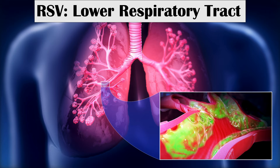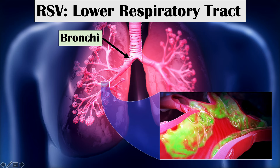Now let's look at the lower respiratory tract. Below the larynx, we have the trachea, and two mainstem bronchi branching off of it. As we go further into the lung, the mainstem bronchi become bronchioles — the smaller bronchi. The bronchioles eventually lead to microscopic air sacs known as alveoli, where gas exchange occurs — where carbon dioxide and oxygen are exchanged.